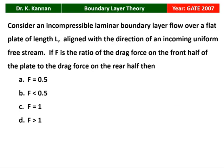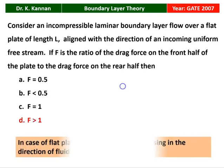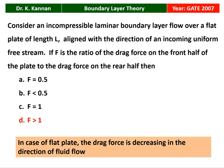The next question from the 2007 GATE question paper: Consider an incompressible laminar boundary layer flow over a flat plate of length L aligned with the direction of the incoming uniform free stream. If f is the ratio of the drag force on the front half of the plate to the drag force on the rear half, then the correct answer is f greater than 1. The drag force on the front end is greater than on the rear side, because for a flat plate the drag force decreases in the direction of flow.